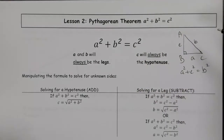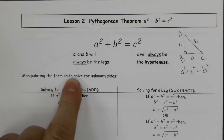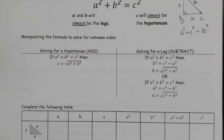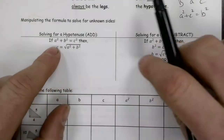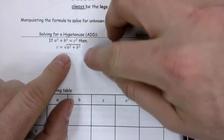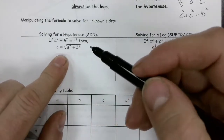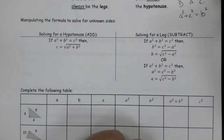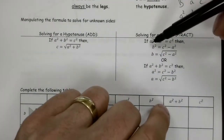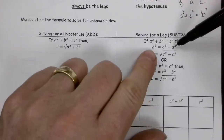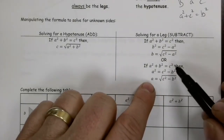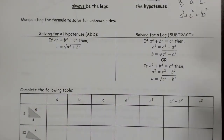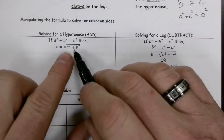A lot of times we will label it a, b, c where c is on the hypotenuse — that's just what people do frequently, but it doesn't have to be that way. If you're going to manipulate the formula to solve for unknown sides, if you don't know the hypotenuse, square the two legs, add them together, and take the square root. If you know the hypotenuse and one leg and need the other leg, subtract the known leg squared from the hypotenuse squared and then take the square root. So if you're looking for a leg, use subtraction; if you're looking for the hypotenuse, use addition.